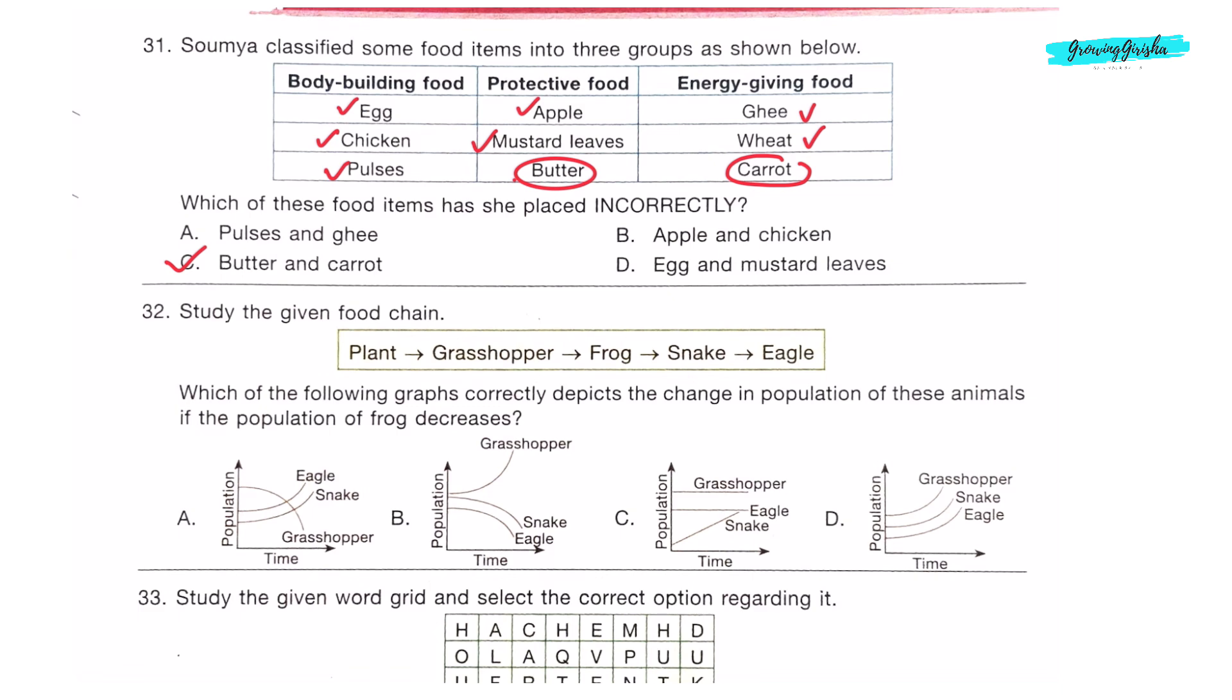Question 32: Study the given food chain. Plant is eaten by grasshopper, grasshopper is eaten by frog, frog is eaten by snake, snake is eaten by eagle. Which of the following graphs correctly depicts the change in population of these animals if the population of frog decreases? If population of frog decreases, population of grasshopper will increase and population of snake and eagle will decrease. Option B shows increase in population of grasshopper and decrease in population of snake and eagle. Option B is the correct answer.